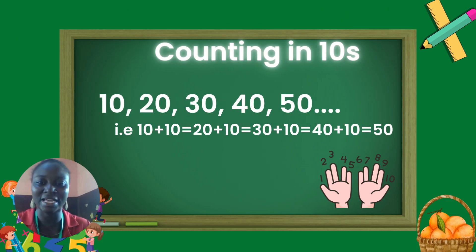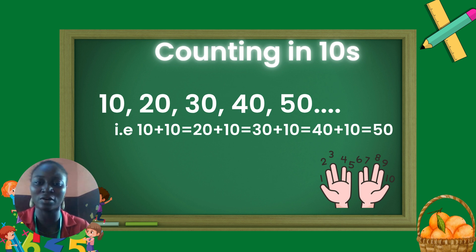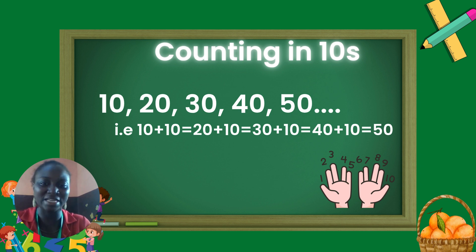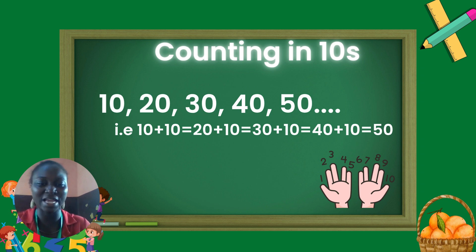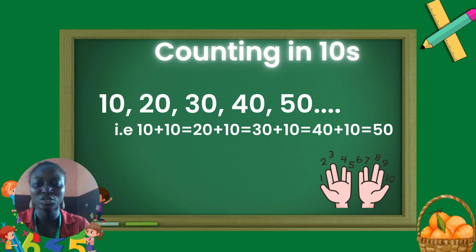Counting in tens. So, counting tens in five consecutive order — in five places. We have ten. Ten plus ten is twenty. Twenty plus ten, thirty. Thirty plus ten is forty. Forty plus ten gives fifty. So, counting in tens in five consecutive order: ten, twenty, thirty, forty, fifty.